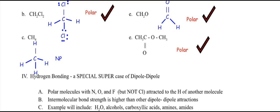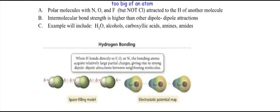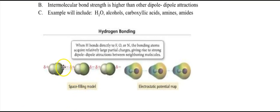Our third type of IMF is hydrogen bonding — a special, super-strong case of dipole-dipole forces. This occurs in polar molecules where nitrogen, oxygen, or fluorine is present — not chlorine, because chlorine is too big (it's in period three with an extra shell). The hydrogen must be directly attached to the N, O, or F. This intermolecular strength is higher than other dipole-dipole attractions. In organic chemistry, water, alcohols, carboxylic acids, amines, and amides all exhibit hydrogen bonding.